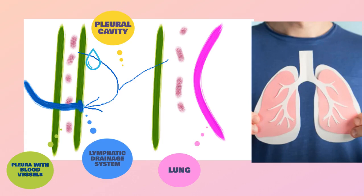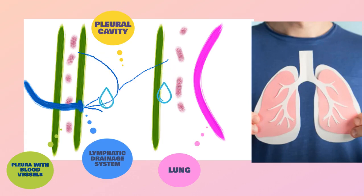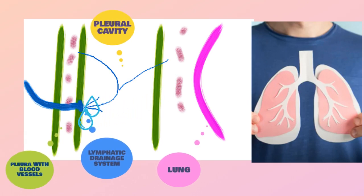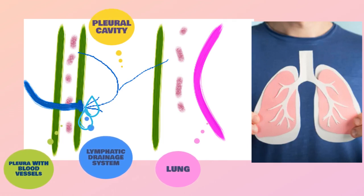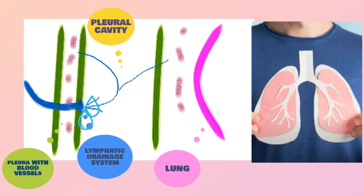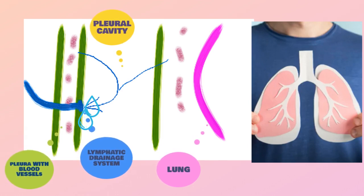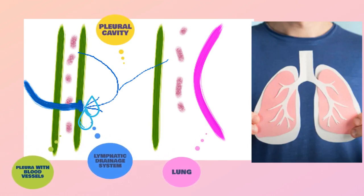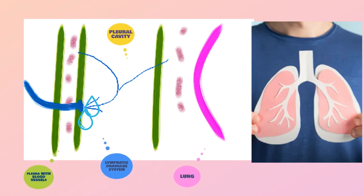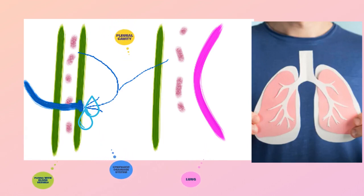To further explain this, the pleural fluid is formed from the vessels, which are shown in the red dots in this image, close to the outer and inner membranes of the lung. This fluid, after it is formed, is then reabsorbed into these vessels, and the leftover fluid exits through the lymphatic drainage spots, which are shown in blue in this picture on the outer membrane.